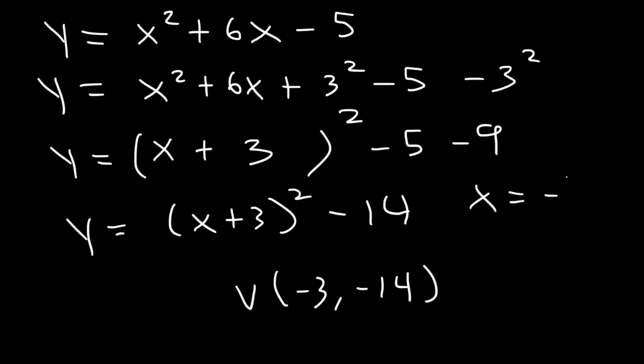And we can also use this equation to find vertex, negative b over 2a. b is 6, a is 1, negative 6 over 2 is negative 3, which confirms the x value here.